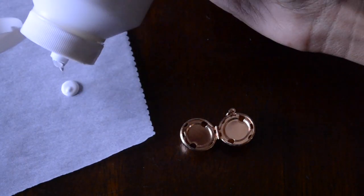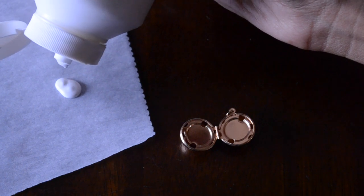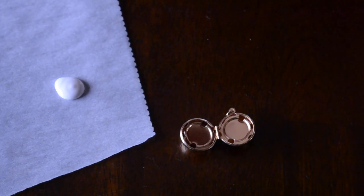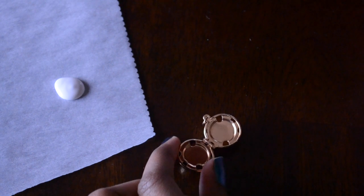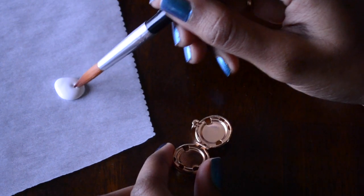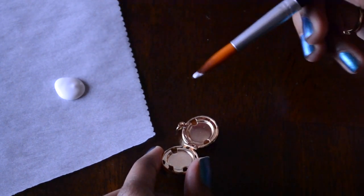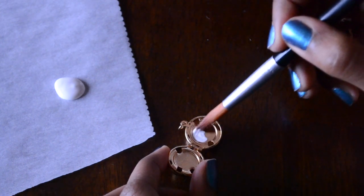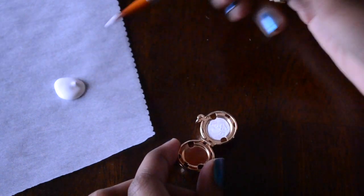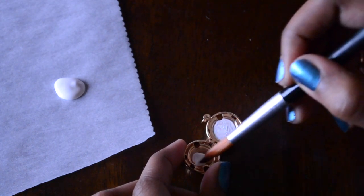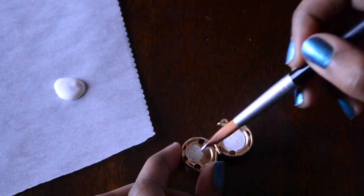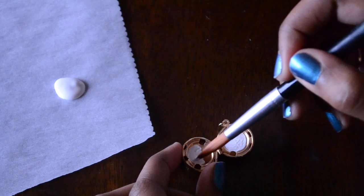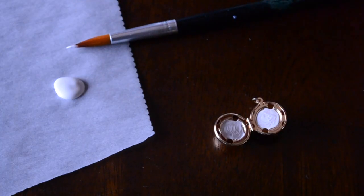First, take your gesso or white paint and coat the inside of the sphere locket. That way, when you're painting it black, you won't get streaks showing the gold metal behind it. Then leave it to dry.